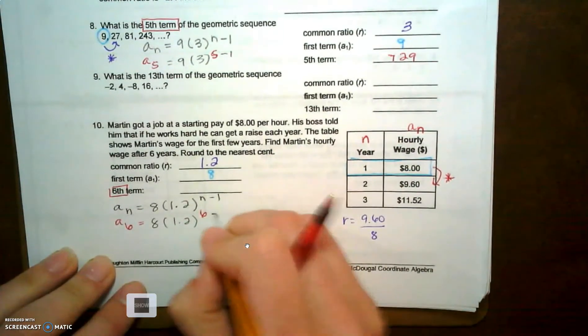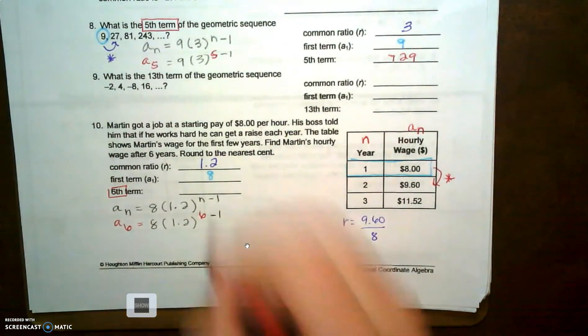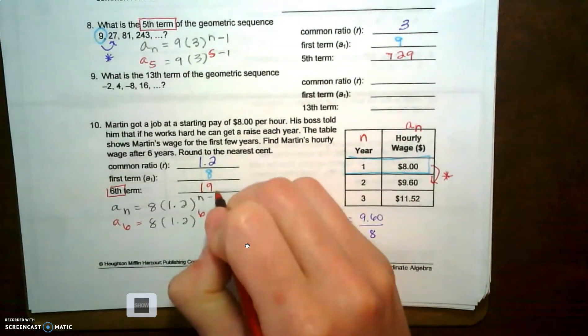So eight times one point two raised to the n minus one. I get nineteen point nine one, which is that wage in year six.